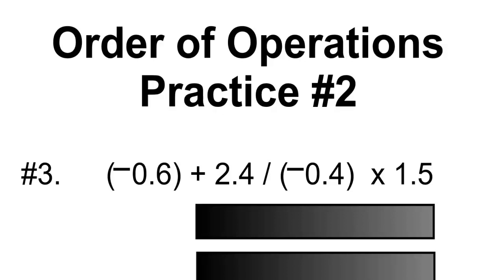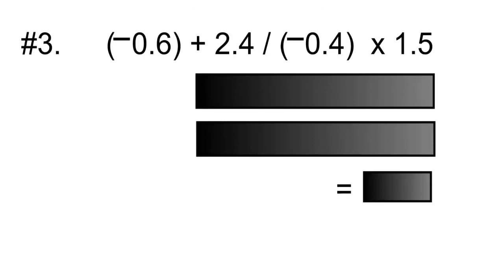Order of operations, practice number two. We'll use BEDMAS to solve. There are no operations within brackets, and there are no exponents, so we'll go right to step three, which is division and multiplication from left to right.